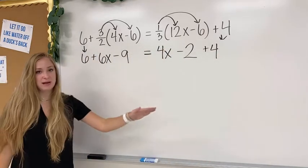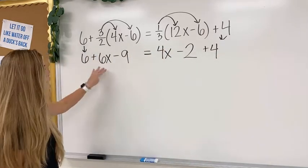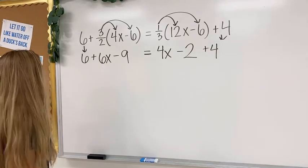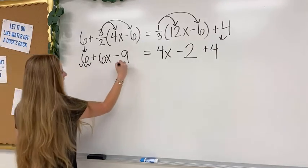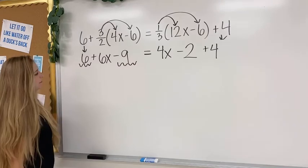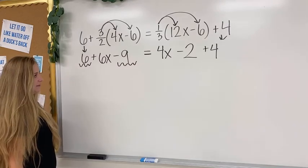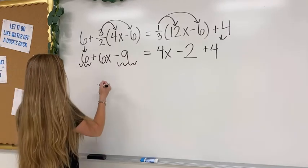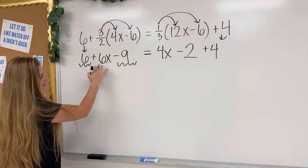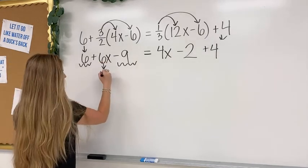Now I re-evaluate my equation. I realize I have one more step to simplify on this side. I need to combine like terms. So I have 6 minus 9, that's going to give me a negative 3, but this 6x has no like terms, so I just bring it down.